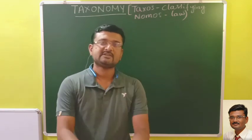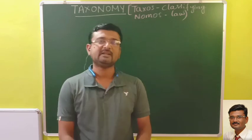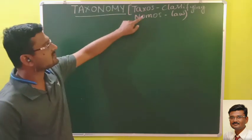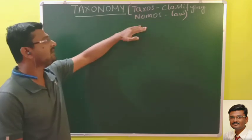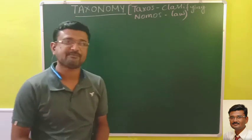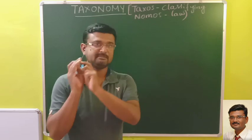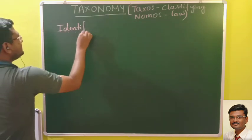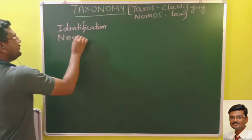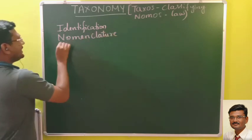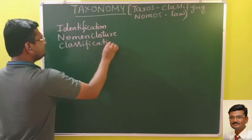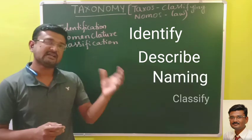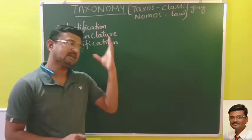Welcome. Today's session will be discussing taxonomy. Taxonomy is a word taken from two Greek words: taxos, meaning classifying, and nomos, meaning with certain laws or norms. Taxonomy is a branch of biology which deals with three things: identification, nomenclature, and classification — identifying the organism, describing it, naming it, and classifying it to where it belongs.